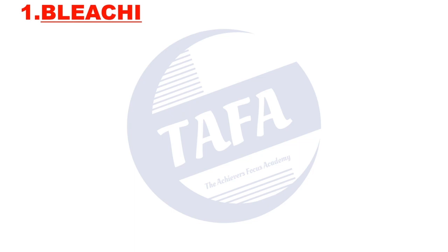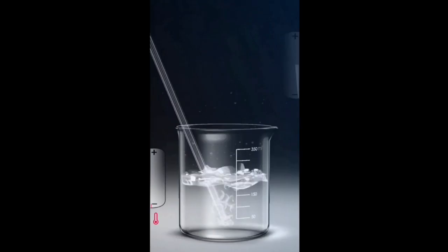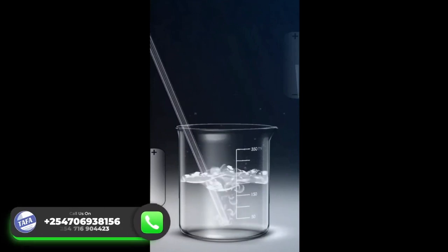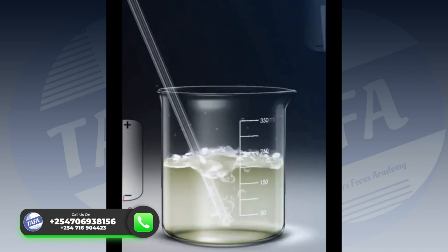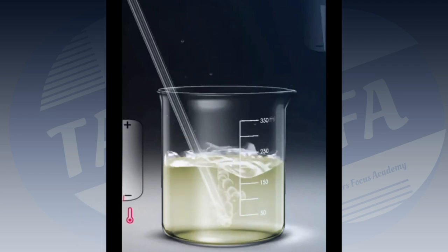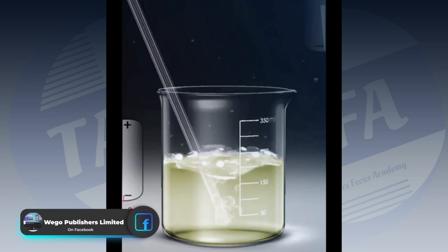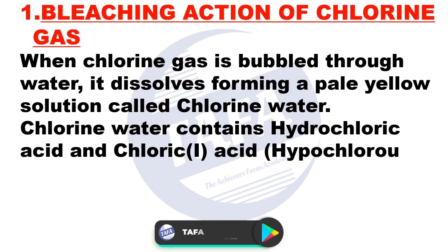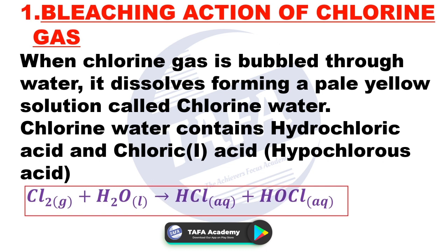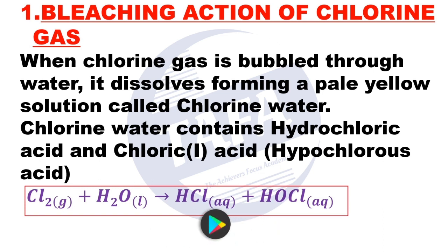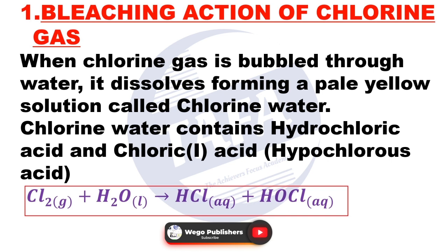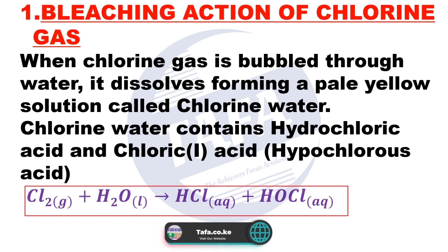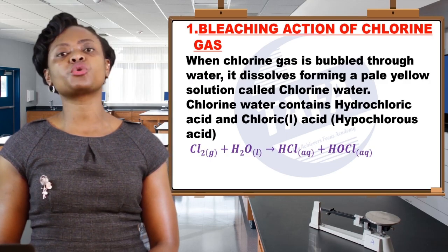Number one: the bleaching action of chlorine gas. When chlorine gas is bubbled through water, it dissolves forming a pale yellow solution, which is referred to as chlorine water. Chlorine water contains two acids: hydrochloric acid and chloric one acid. Chlorine dissolves in water to give us hydrochloric acid in the aqueous state, and chloric one acid, whose formula is HOCl, also in the aqueous state.